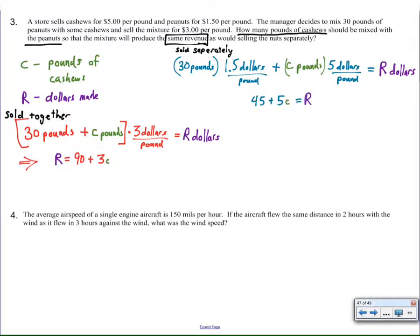Anyway, simplifying this and getting rid of all the labels, once again we're going to notice pounds divide out and we're left with dollars, so $45 plus $5C dollars equals revenue dollars for sold separately. Sold separately, sold as a combination, creates a total system.